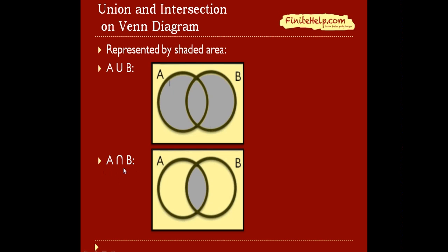A intersects B, which is the elements only common between A and B. So on the Venn diagram, you would shade only what's common between A and B, which is the overlapping area in the middle here.